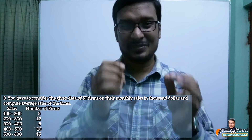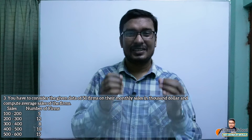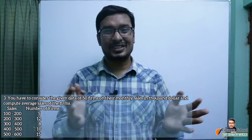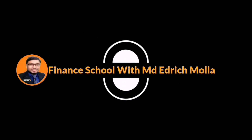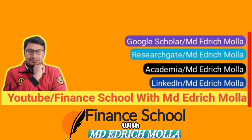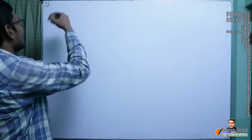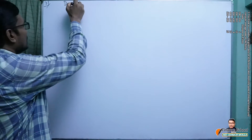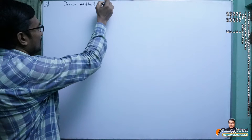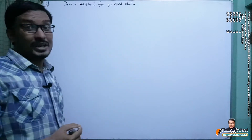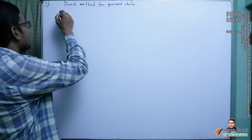A particular illustration is showing on your device. Considering this illustration, we find that we are given 50 companies' sales. We need to find out the mean or average. This is illustration number three, so we can write number three and 'direct method for grouped data,' and we have to find out the mean here.